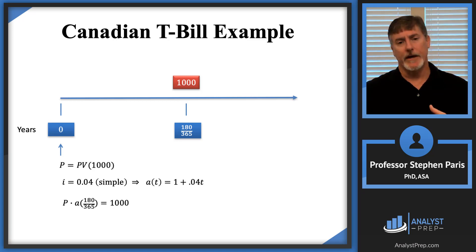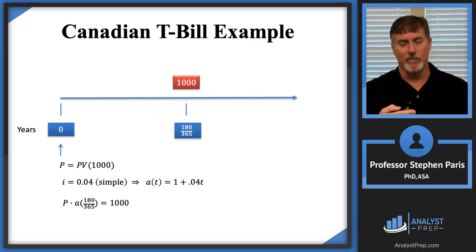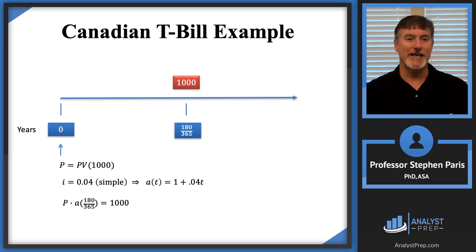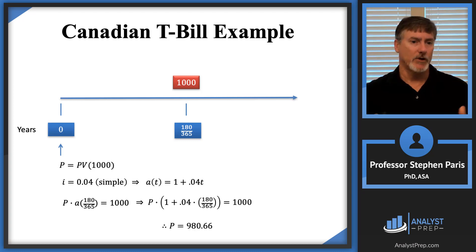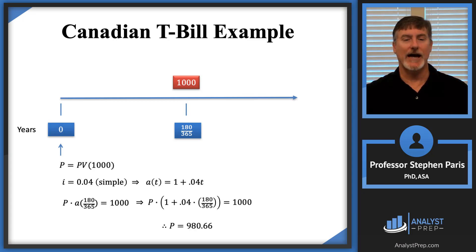Plugging 180/365 in for T in the accumulation function gives the equation I want to solve. When I do so, the price of this Canadian T-bill comes out to $980.66.